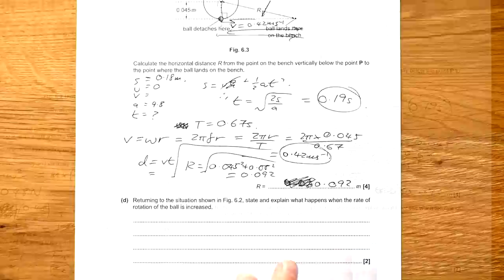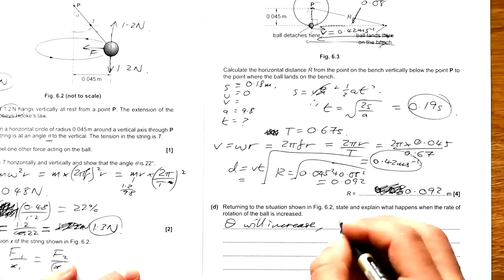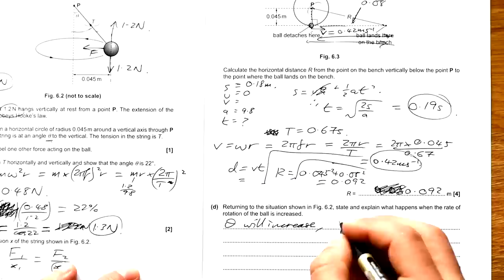Finally, returning to the situation shown in 6.2, state and explain what happens when the rate of rotation of the ball is increased. Two things happen. You know that if you spin something faster, then that means that this is going to fly upwards more. So the angle is going to increase. Theta will increase. What else will increase? Well, T will increase. And of course, if the tension increases, then the extension will too. And we can say due to a larger centripetal force. There you go. So I hope you found this helpful. Please leave a like if it did. And if you want to see any other past paper videos that I've done, check out my channel and I'll see you there.